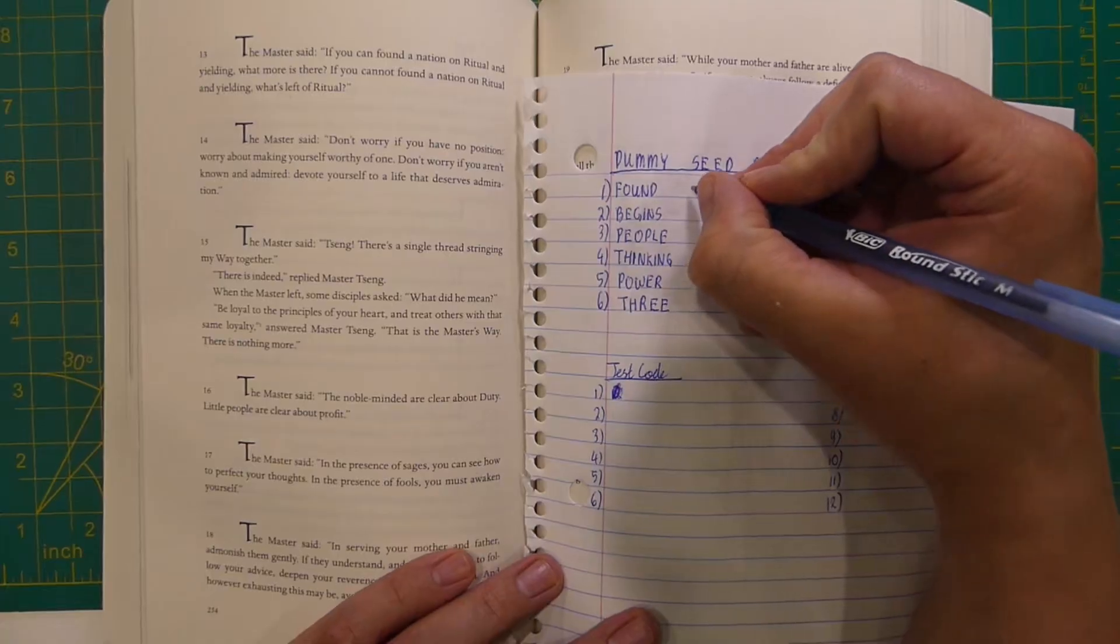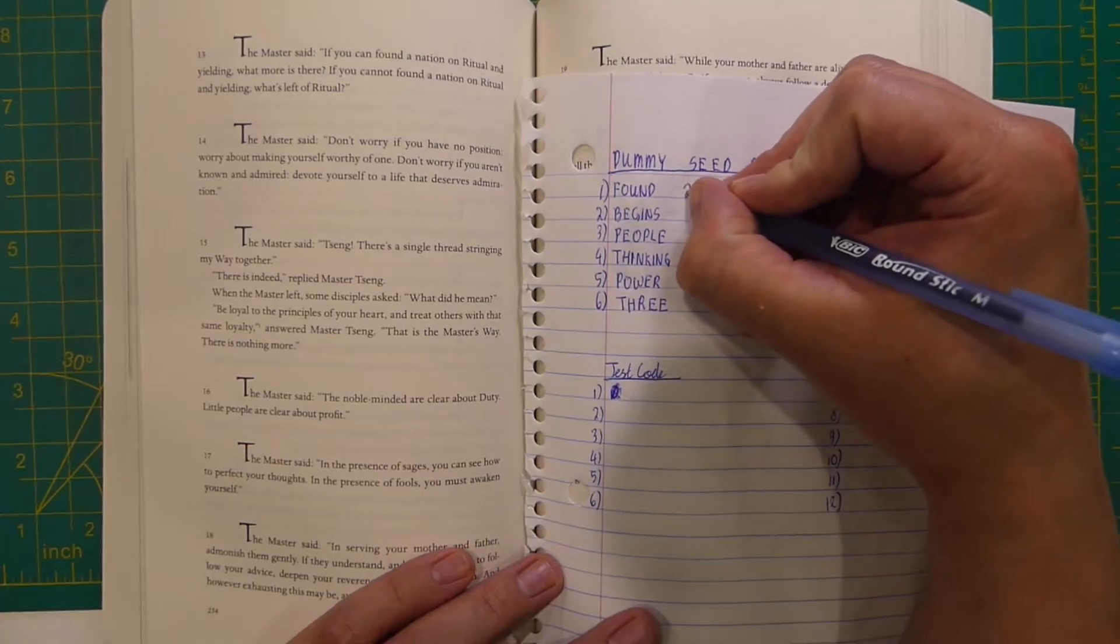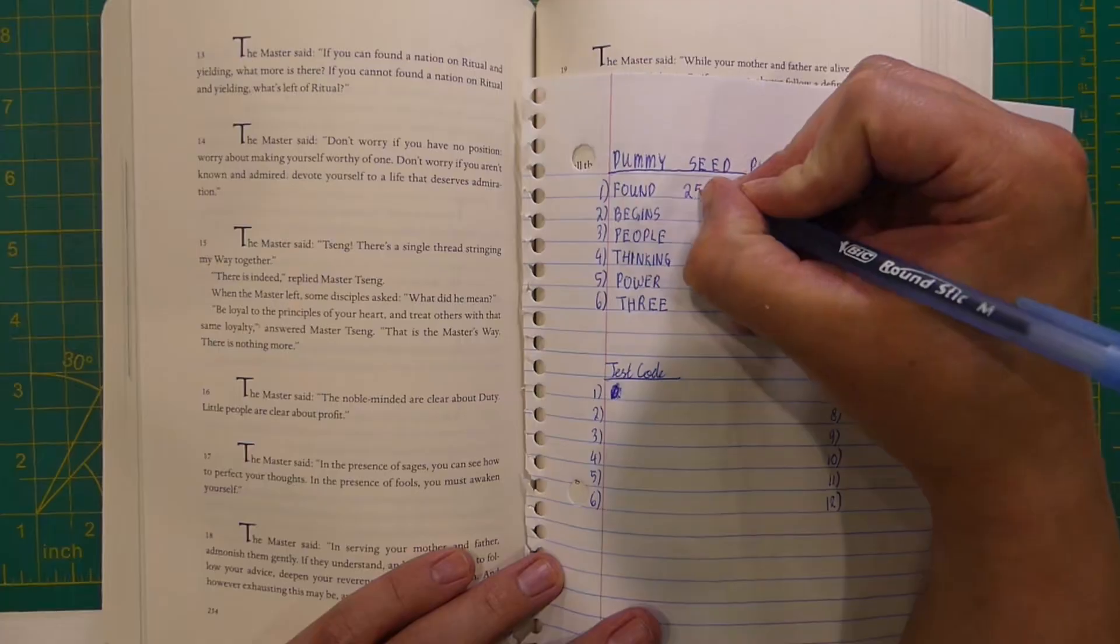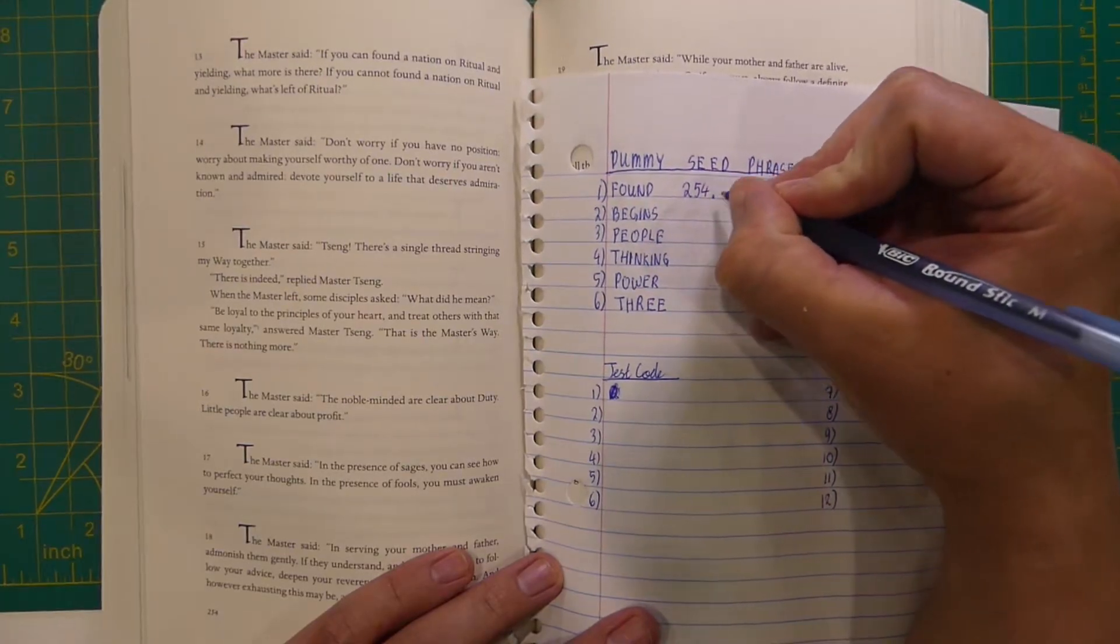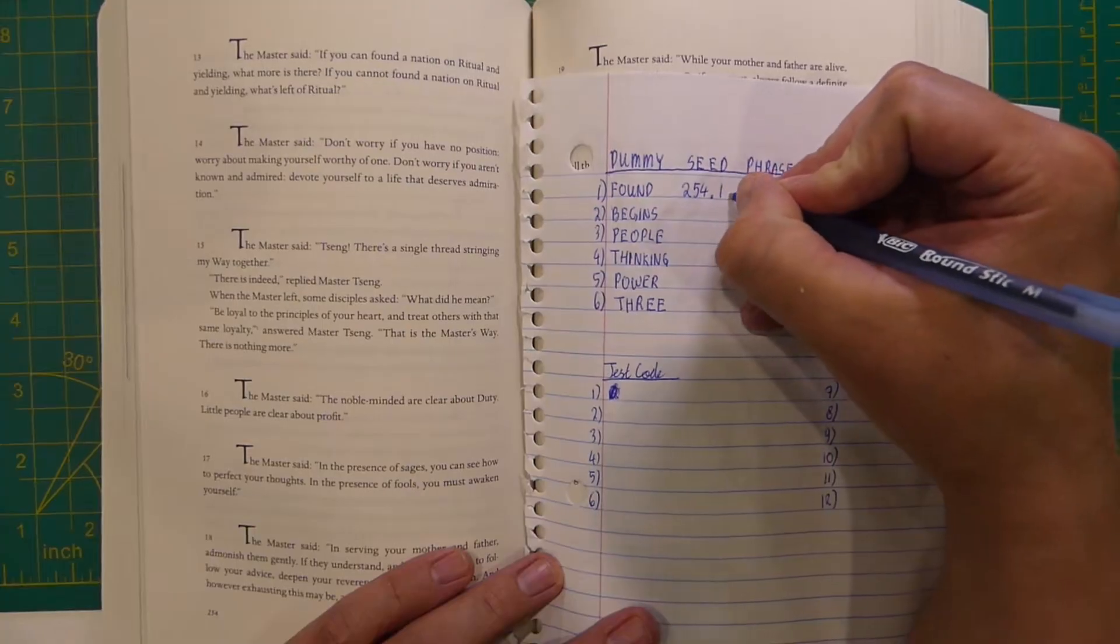So I found the word 'found' in word position seven. So I would write down: page 254, line one, word position seven.